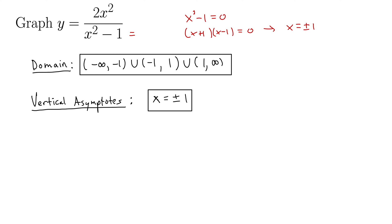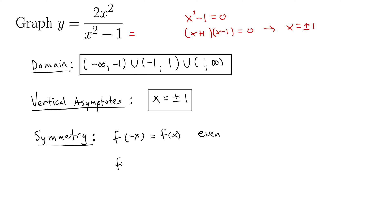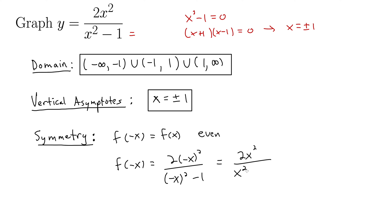Let's move on to symmetry. Recall that if we evaluate f of negative x and we get simply f of x back, that means it's an even function. In this example, when we evaluate f of negative x, we get 2 times negative x squared over negative x quantity squared minus 1, which indeed gives us the original function 2x squared over x squared minus 1 back. So we are indeed even in this case.